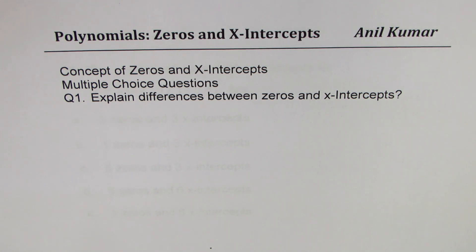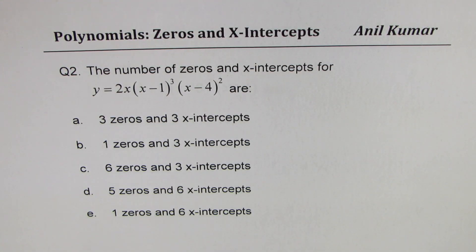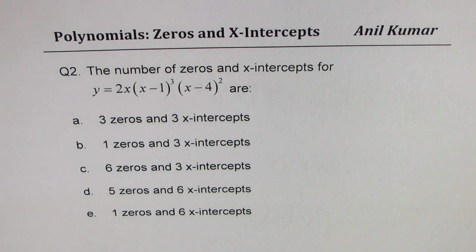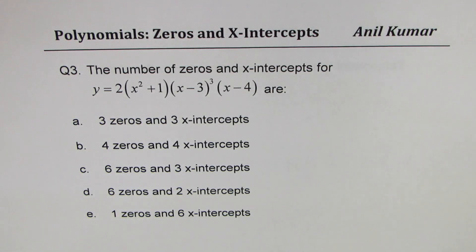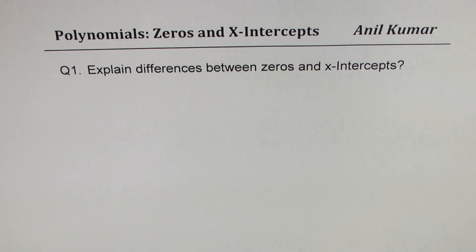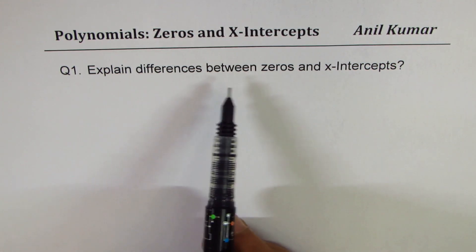Here is question number two, which says: the number of zeros and x-intercepts for y equals 2x times (x minus 1) cubed times (x minus 4) squared are how many? There are five choices — you can pause the video, look into these choices, answer, and then check with my solution. Here is question number three, which asks the number of zeros and x-intercepts for another polynomial. Once you understand the concept between zeros and x-intercepts it'll be easier for you to solve such questions.